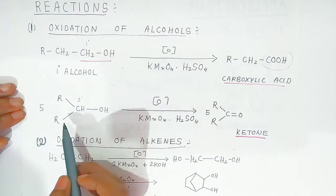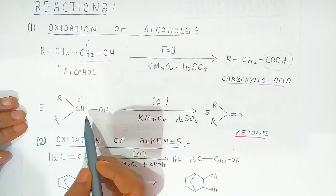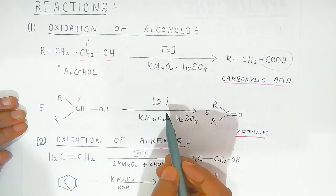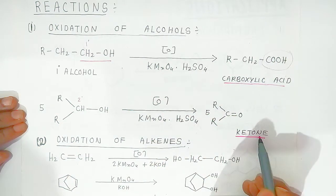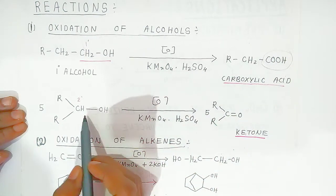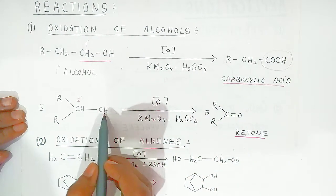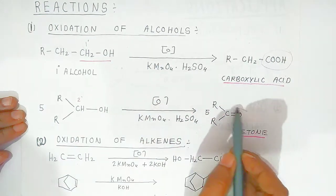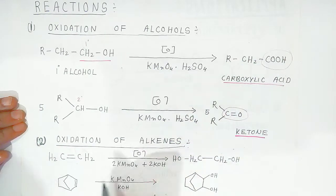Secondary alcohol can also be oxidized to a ketone. Here the CH2OH group is converted into a ketone group.